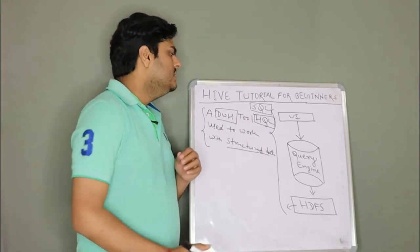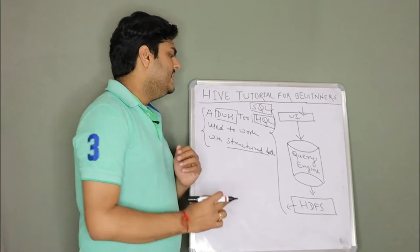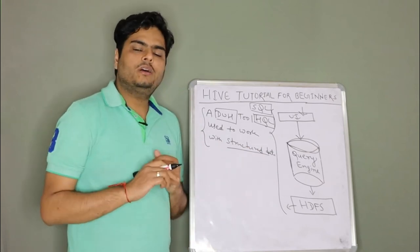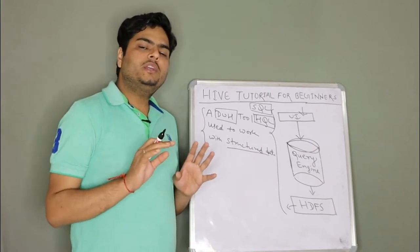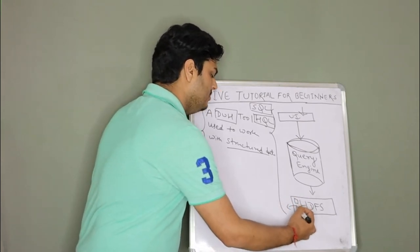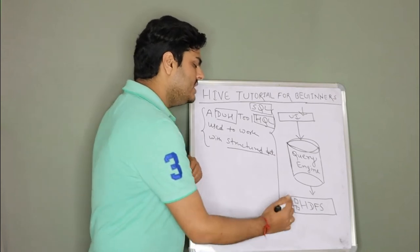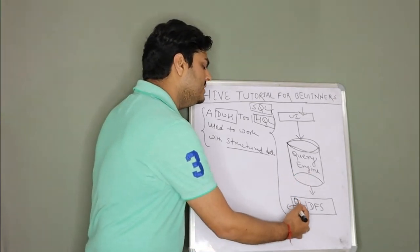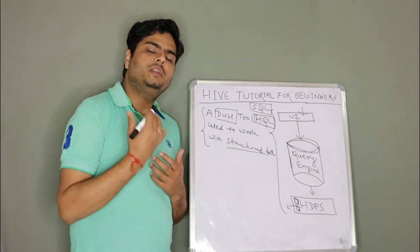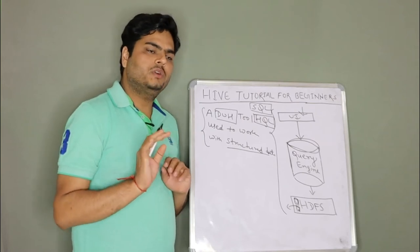How Hive will work internally? User will come and submit a query here. Query means some SQL query you can say. And this is the query engine. In this query engine, this query will be taken and data of the Hive tables is actually stored in the form of files in HDFS. In HDFS you will see different files for different Hive tables. For example, when you say select star from EMP, there will be a table or there will be a file or many files of EMP data in the HDFS. This query engine will fetch the relevant data from the HDFS and display you the output in tabular format.